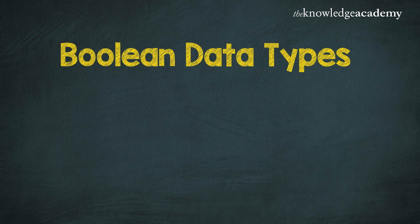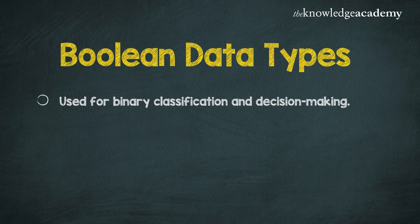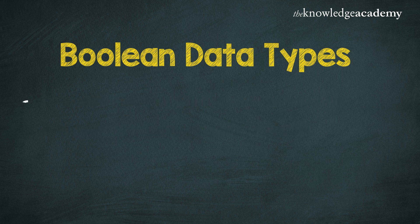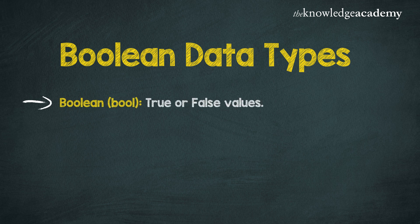Next is boolean data types. They are used for binary classification and decision making, and can only hold two values: true or false. They are essential for making simple decisions within algorithms. For instance, checking if a condition is met can be represented as true or false.